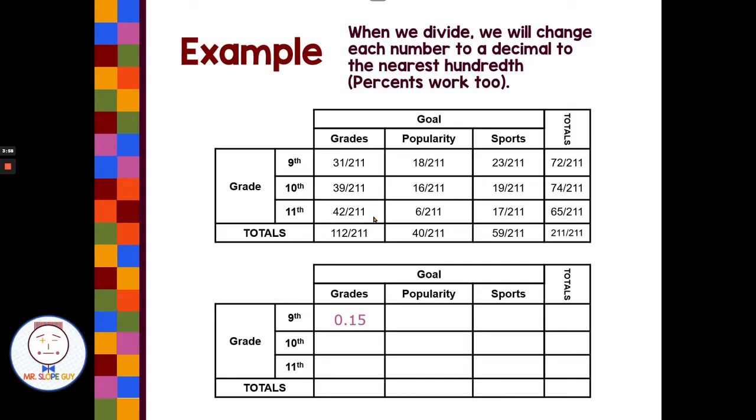So we can go through and continue to do this for the whole table. 39 divided by 211, 42 divided by 211, 112 divided by 211, 18 divided by 211, 16 divided by 211. So I'm going to continue to divide each number by our overall total of 211, and it changes everything to decimals. And we're rounding to the nearest hundredth.